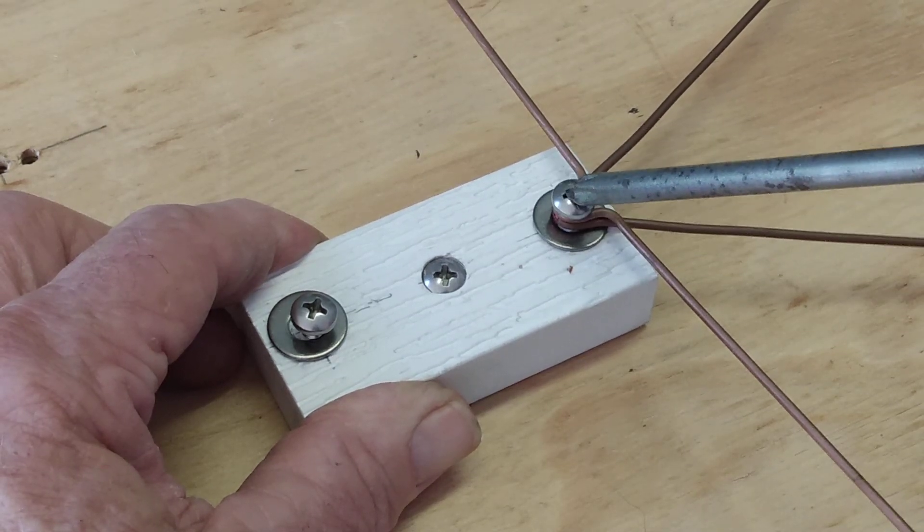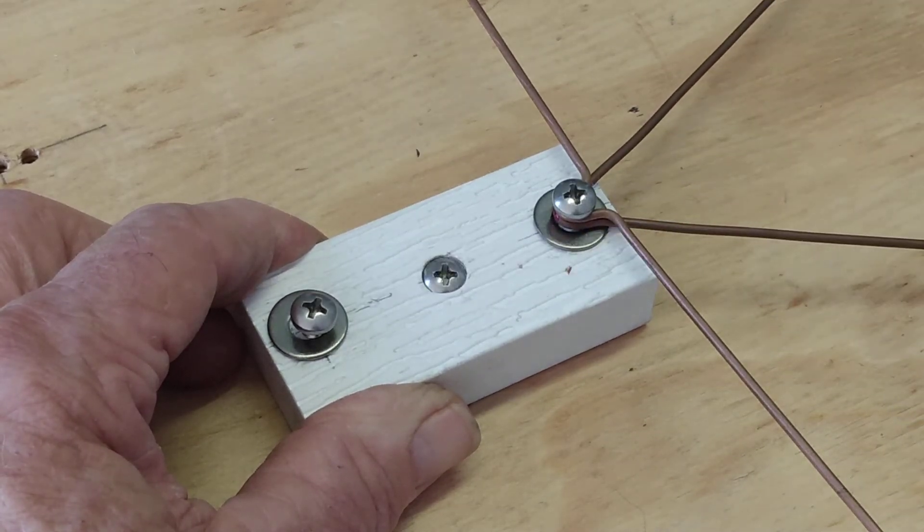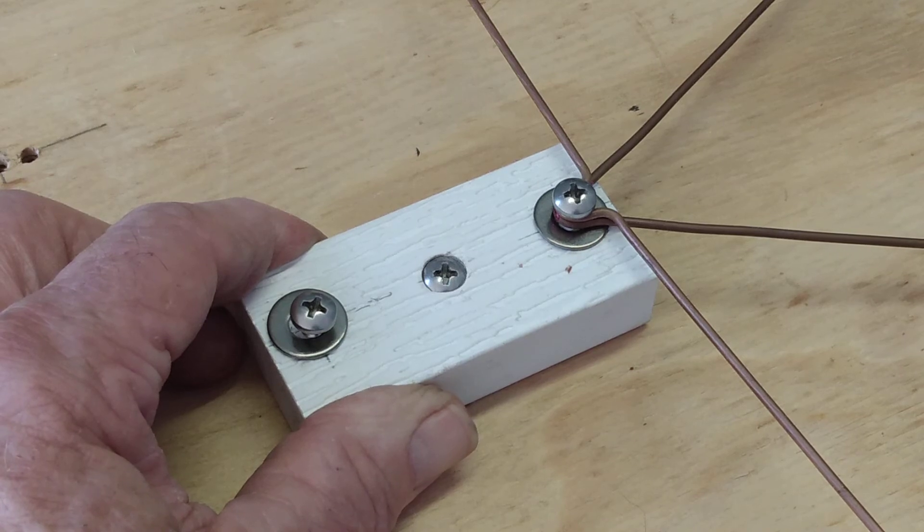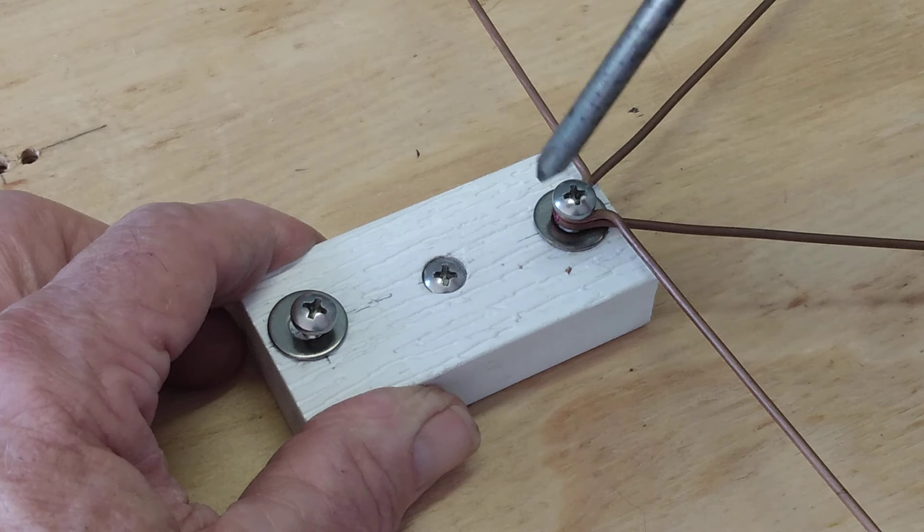So your electromagnetism is jumping from here to there to there, and it's shorting out your antenna. You put it up, it works, but it doesn't work well. Oh, what's going on? Must be the trees. No, it's not.